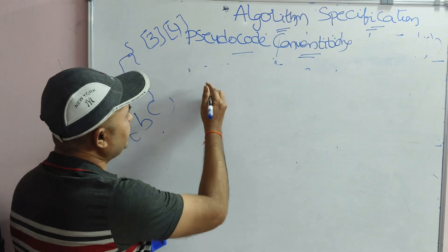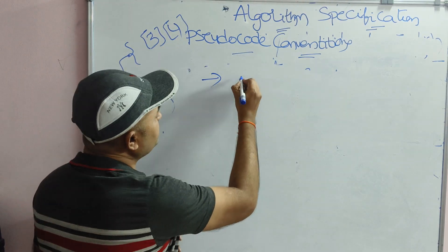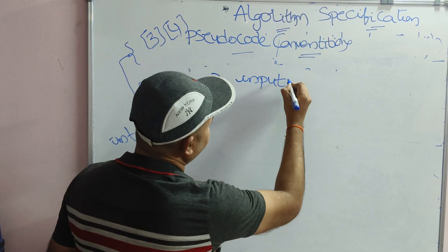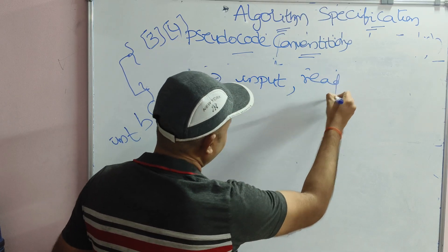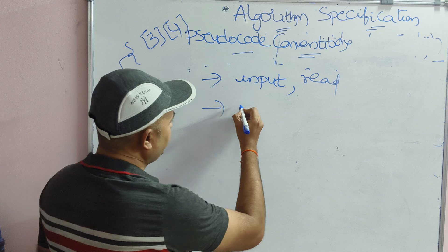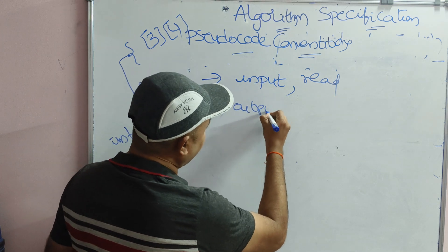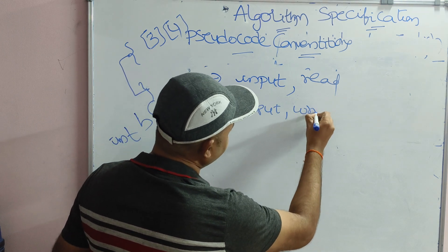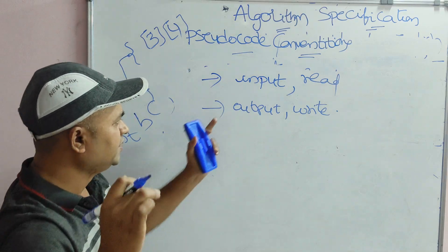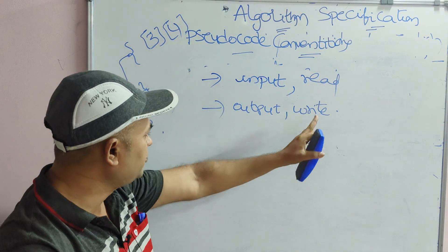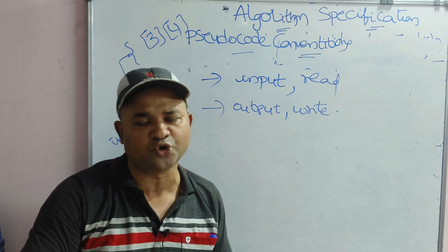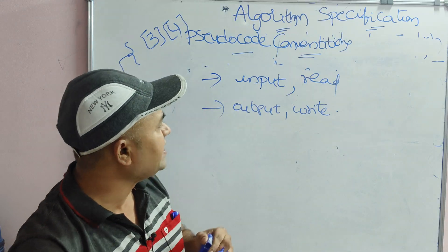The last statements are for input and output. For reading/input we use 'input' or 'read'. For displaying/output we use 'output' or 'write'. This concludes the pseudocode notations used while writing algorithms.